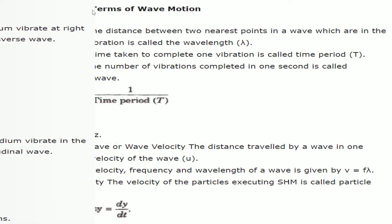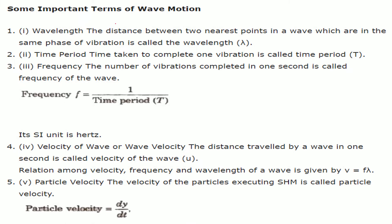There are various important terms related to wave motion. Wavelength, represented by lambda, is the distance between two nearest points in which a wave has the same phase — such as two crests, two troughs, two nodes, or two antinodes. Time period is the time taken to complete one vibration. If you take one divided by T, it becomes frequency — the number of vibrations completed in one second, which is the inverse of the time period.